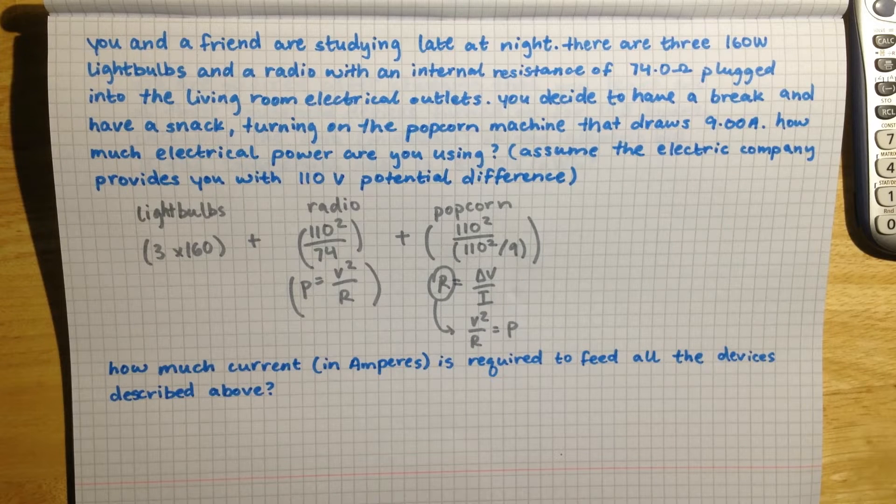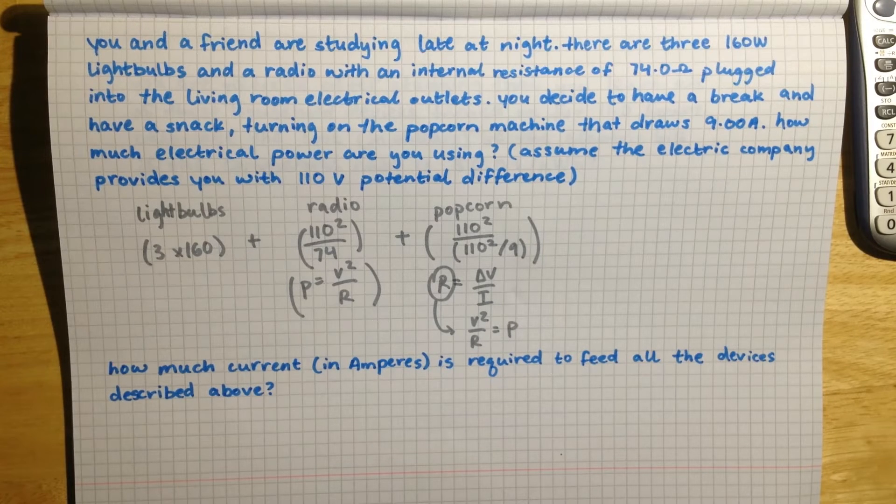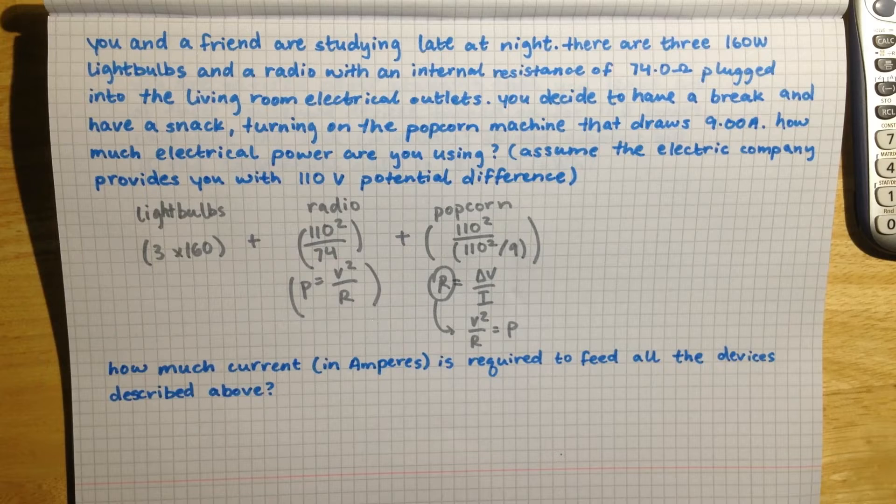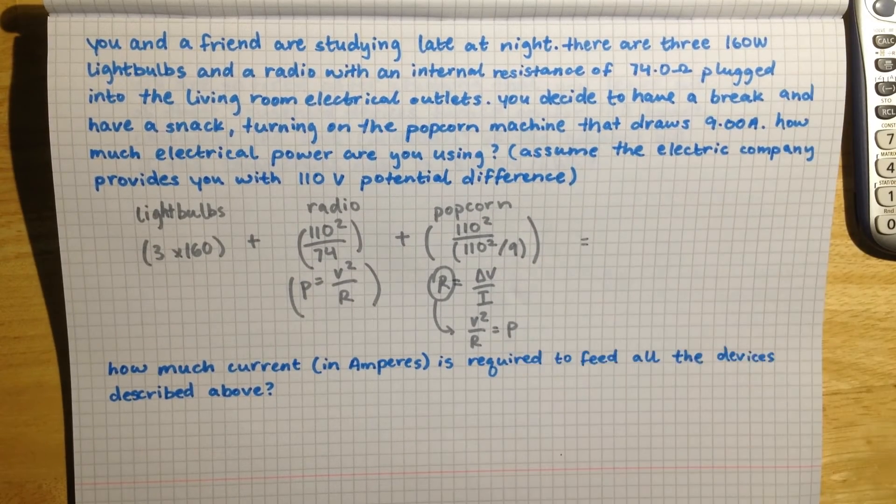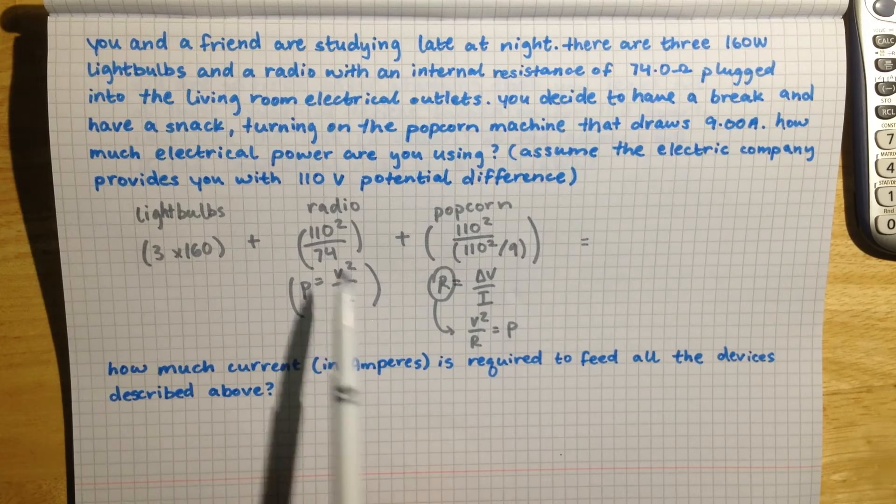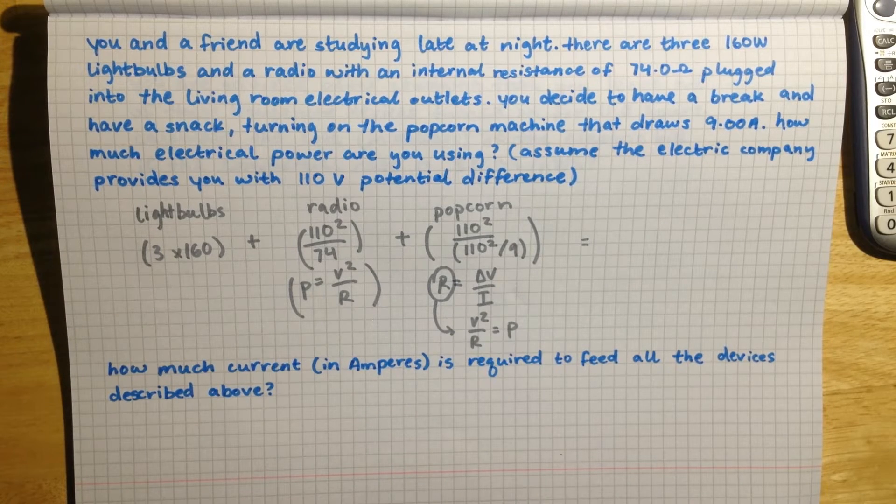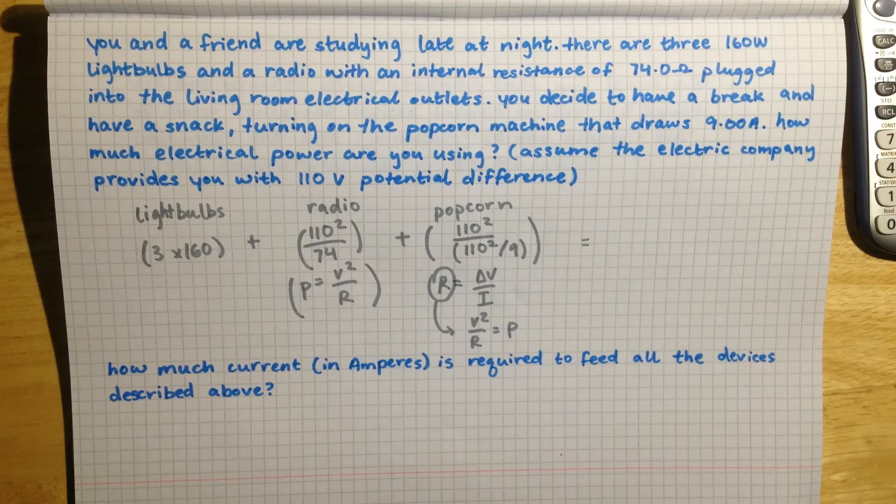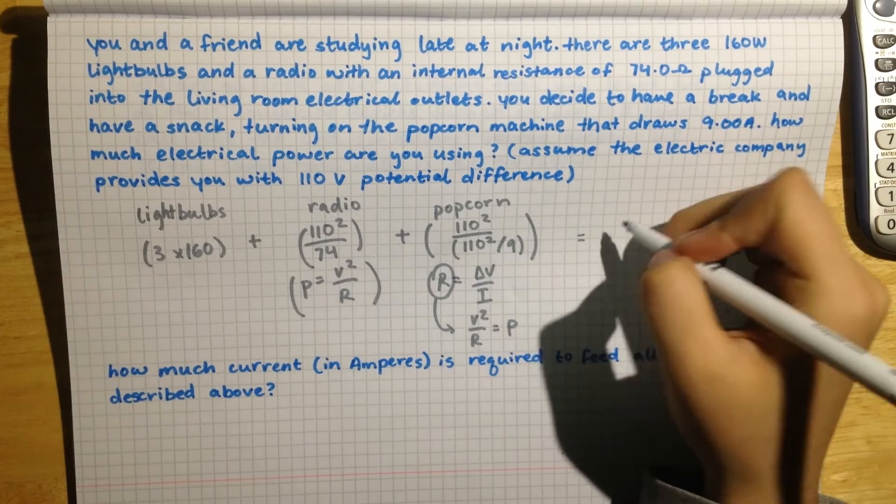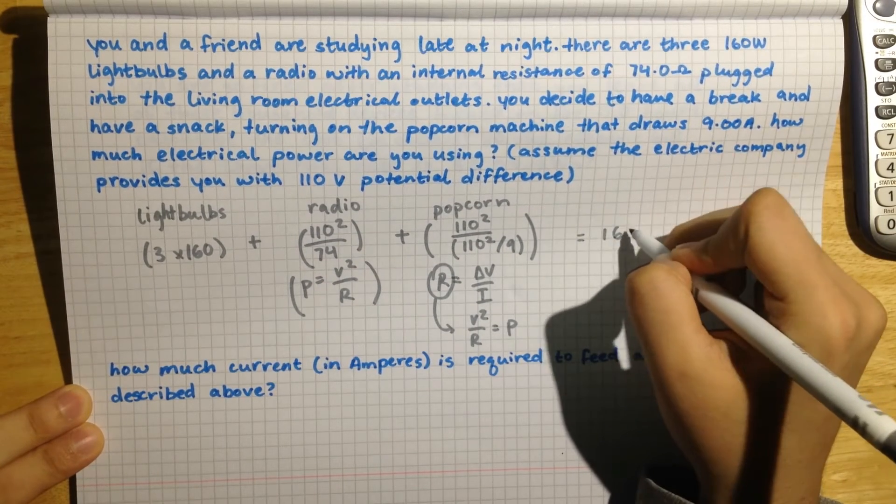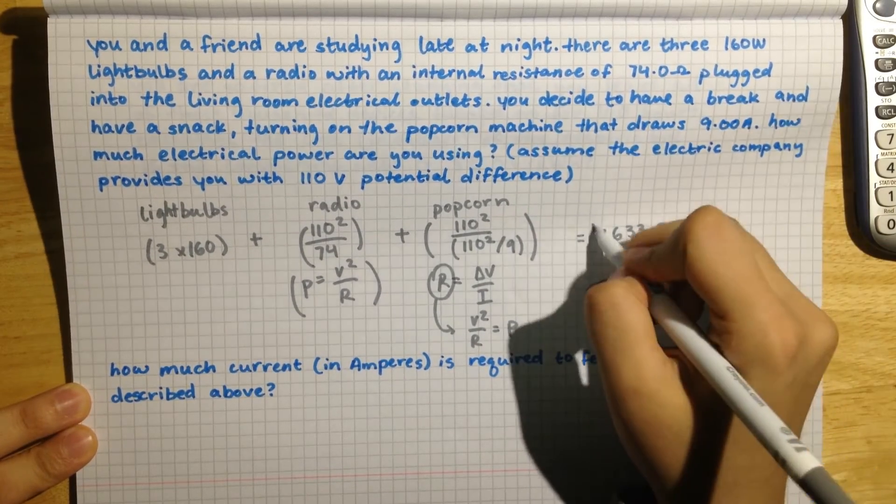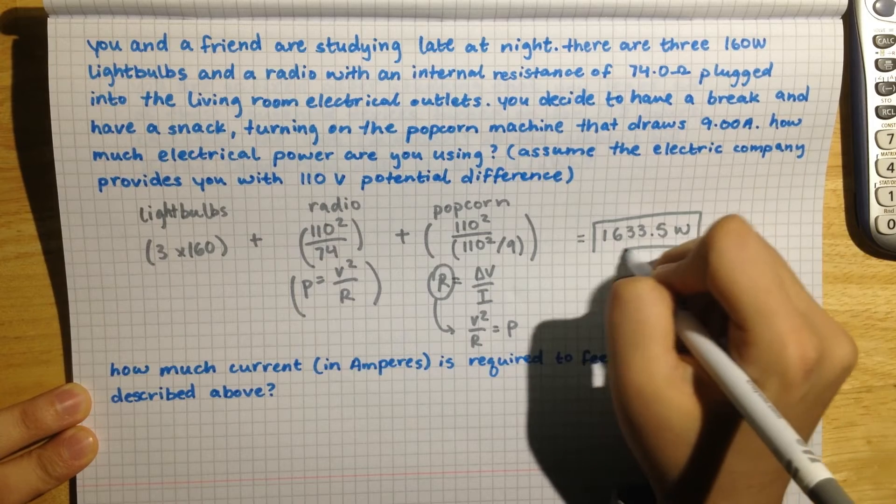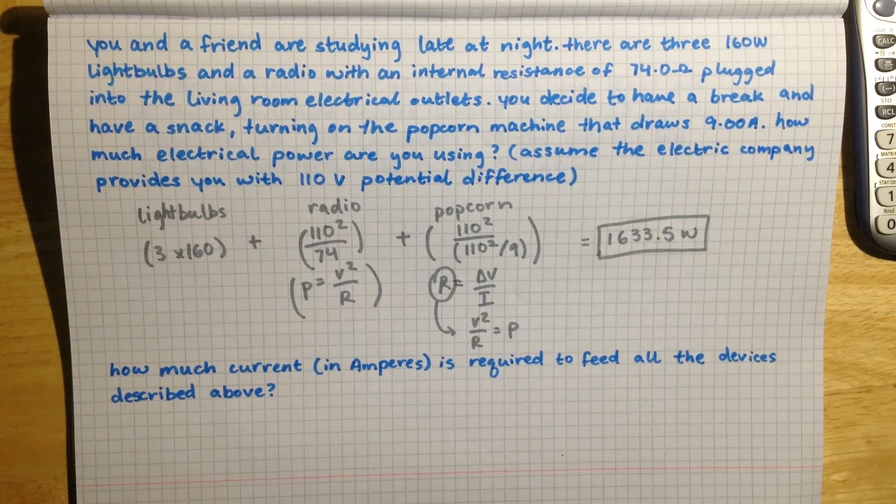And so these are the three values that are going to be, when we add them up, the total power that the devices are using. So we can just plug this, this, and this into the calculator and then add those values up. So when we put all of them into the calculator we get 1633.5, and that will be watts because that is the total amount of power that these three different types of devices are going to be using.